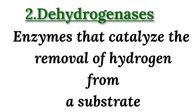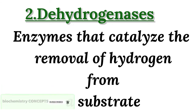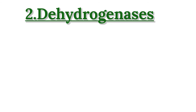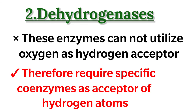Coming to the second group of oxidoreductases, that is dehydrogenases: enzymes that catalyze the removal of hydrogen from a substrate are called dehydrogenases. Unlike oxidases, dehydrogenases cannot utilize oxygen as a hydrogen acceptor. Because of this, dehydrogenases require specific coenzymes as acceptors of the hydrogen atoms.